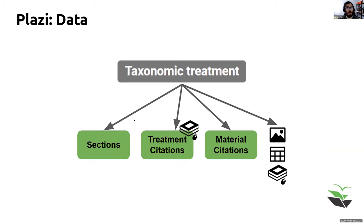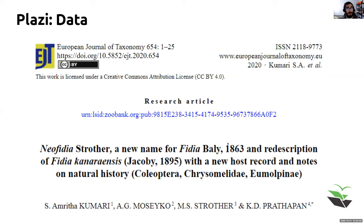The sections include the description, which is the author's interpretation of that particular taxon concept, etymology if it's a new name, and two particularly important ones: treatment citations — which Donat briefly explained — and material citations, which raised questions in the chat. Taxonomic treatments also cite images, tables, and references.